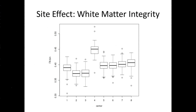Here's an example from the Imagen data set — a fantastic data set looking at imaging and behavioral measures in a large group of about 1,000 14-year-old healthy kids recruited from across Europe. On the y-axis is a measure of white matter integrity, and you can see that seven of these eight sites have a pretty tight clustering of their mean white matter integrity value. But site number four is a clear statistical outlier, probably due to some sort of hardware difference or artifact.